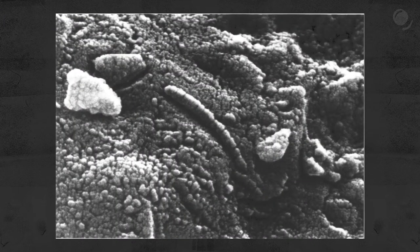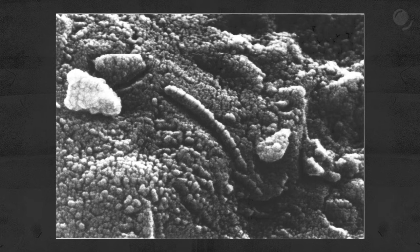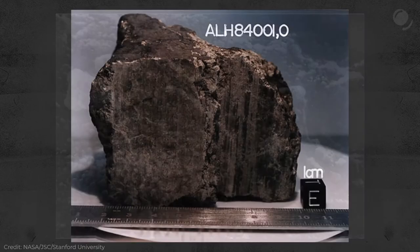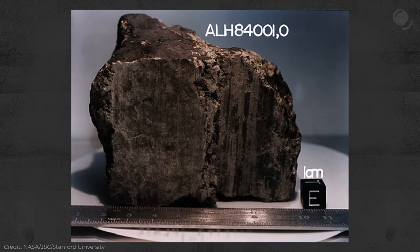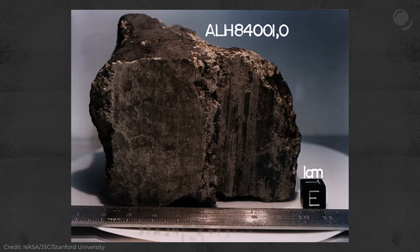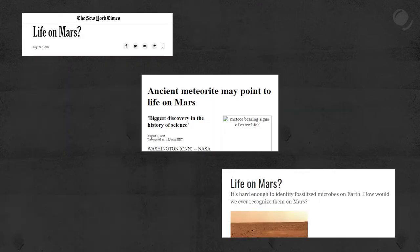Many of you are probably familiar with this image — the microscopic image of structures that look like some kind of microorganisms in a rock. And not just some rock, but in a meteorite from Mars. It is called Allen Hills 84001, and decades ago it made headlines.